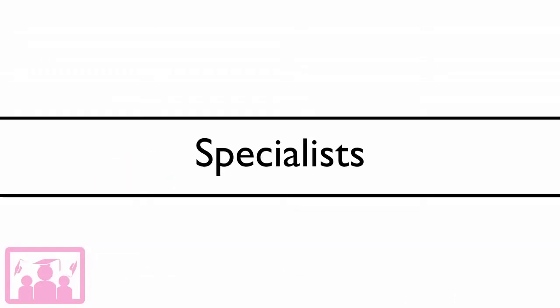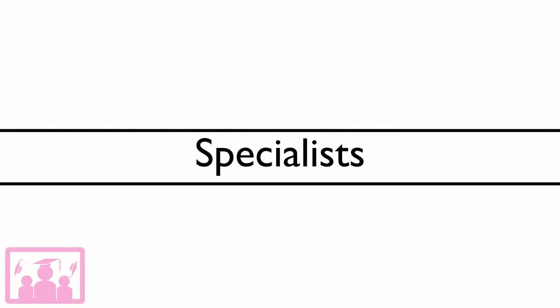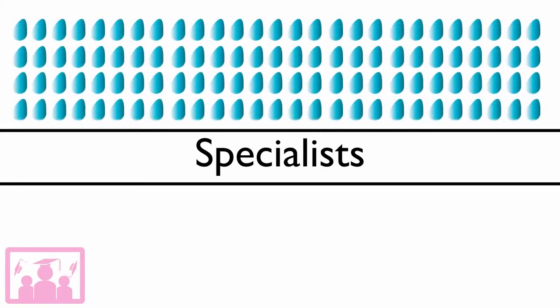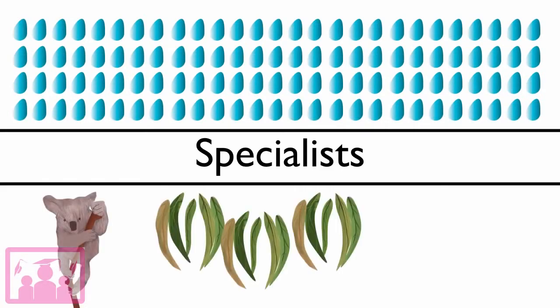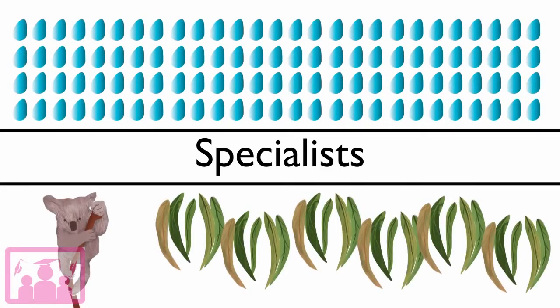Specialists are the opposite. They can only survive within a narrow range of parameters. For example, some plants may be reliant on a certain amount of rainfall, or an animal may feed exclusively on one species. They have a specialised ecological niche.